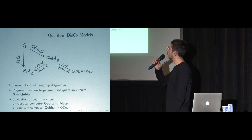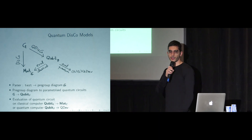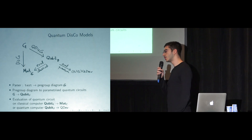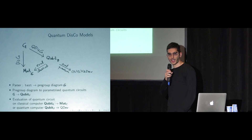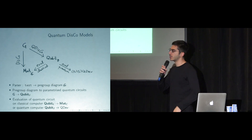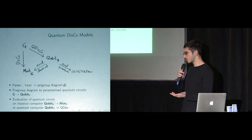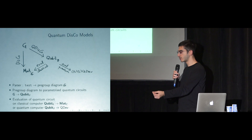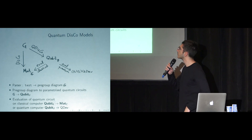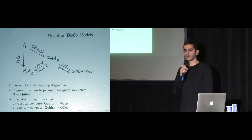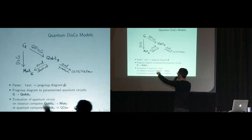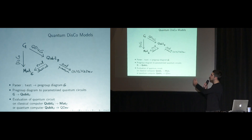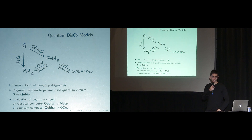This is the high-level overview. G would be a category of pre-group types as we saw before — different grammatical types that compose and reduce to give you a sentence type. When this reduction is possible, it's a proof that a given parsing reduces to the sentence type and is grammatical. The whole DisCo model we heard about is this arrow: you go from grammar category G to category C of matrices and linear maps.